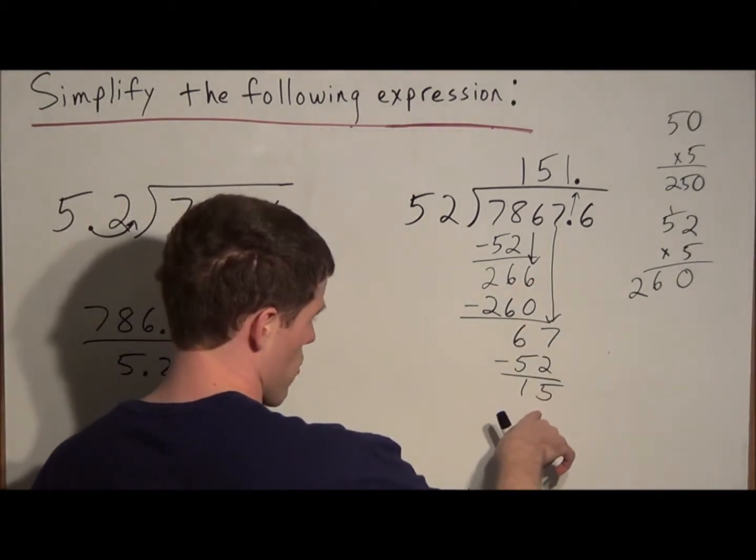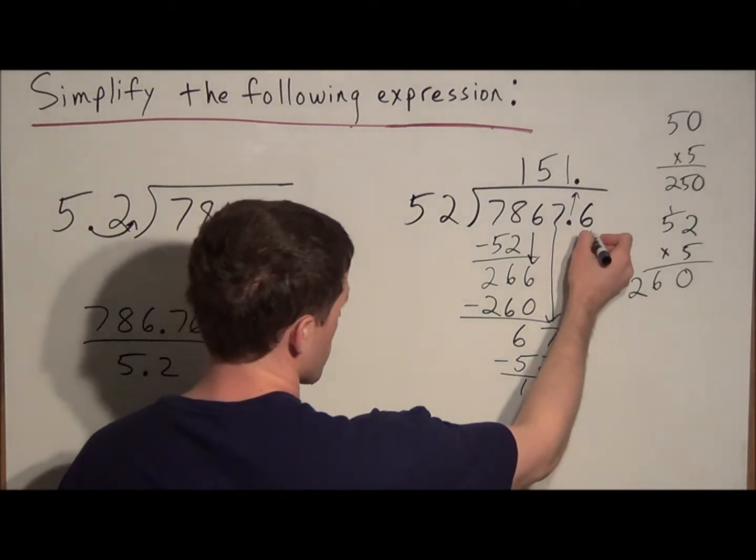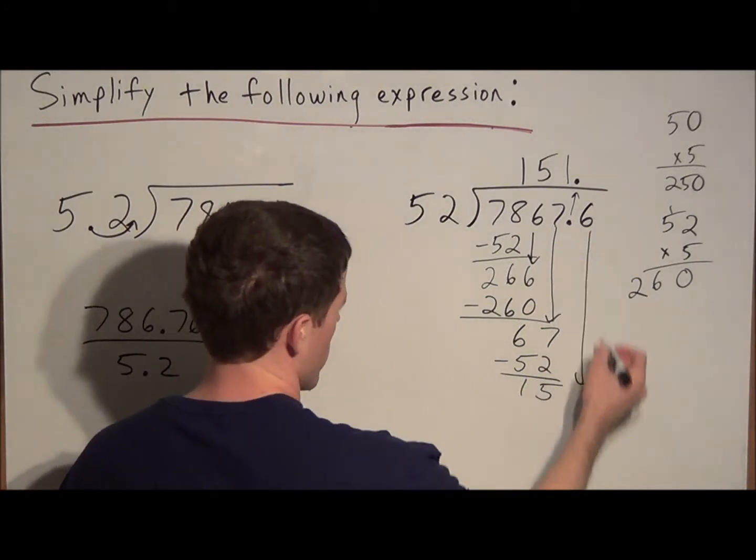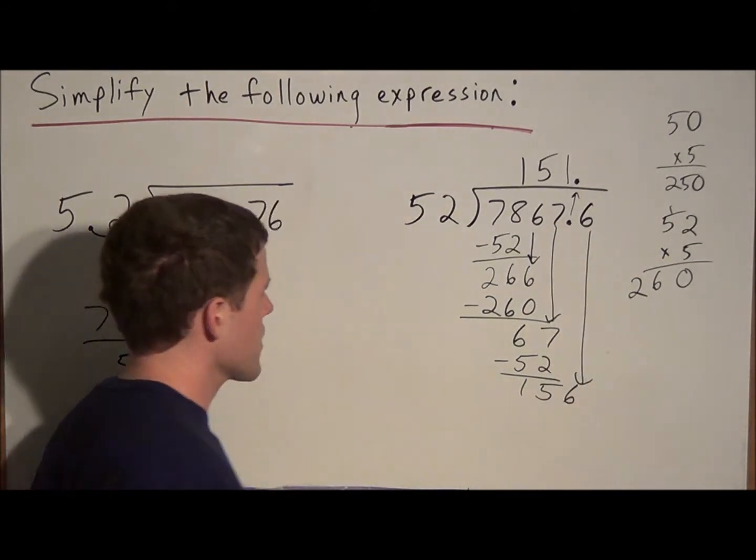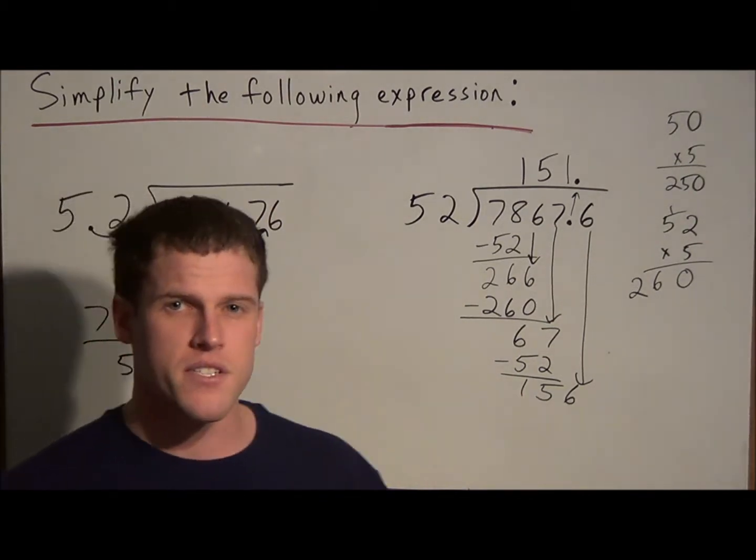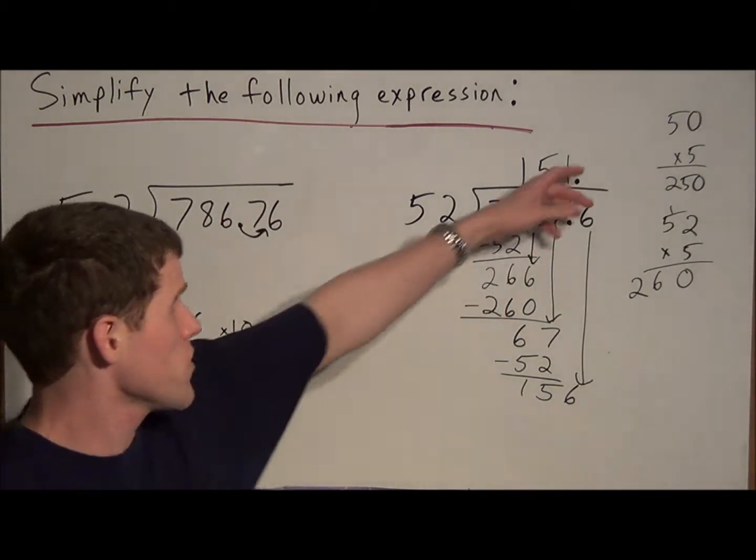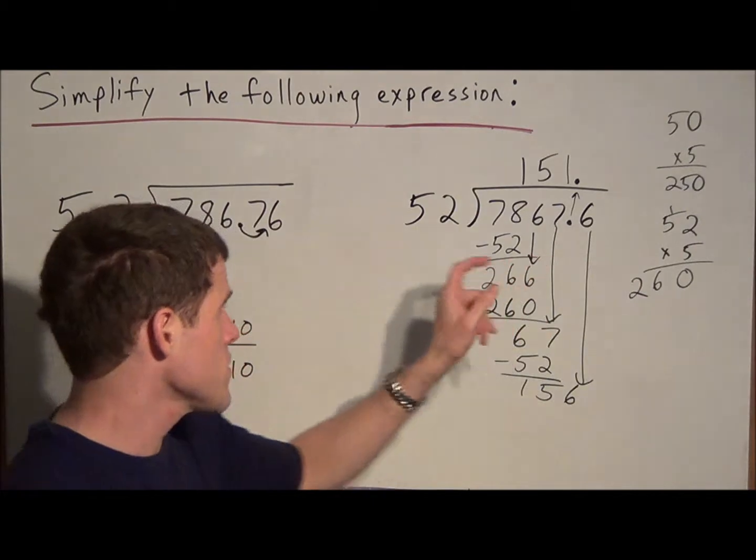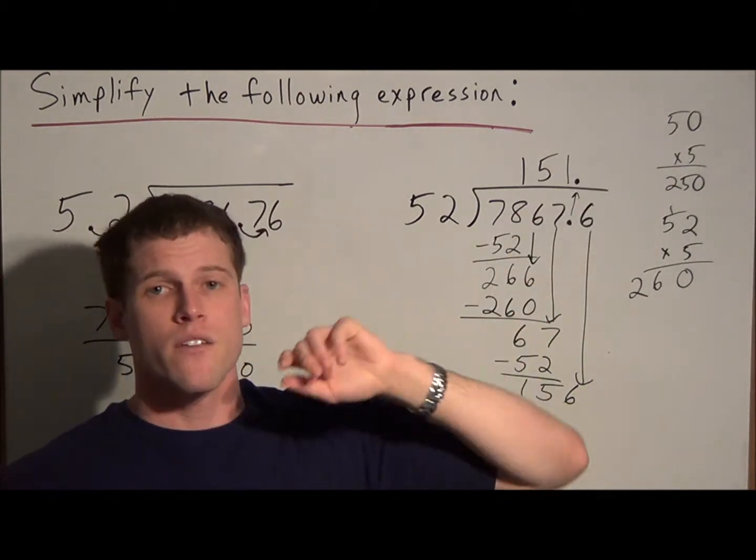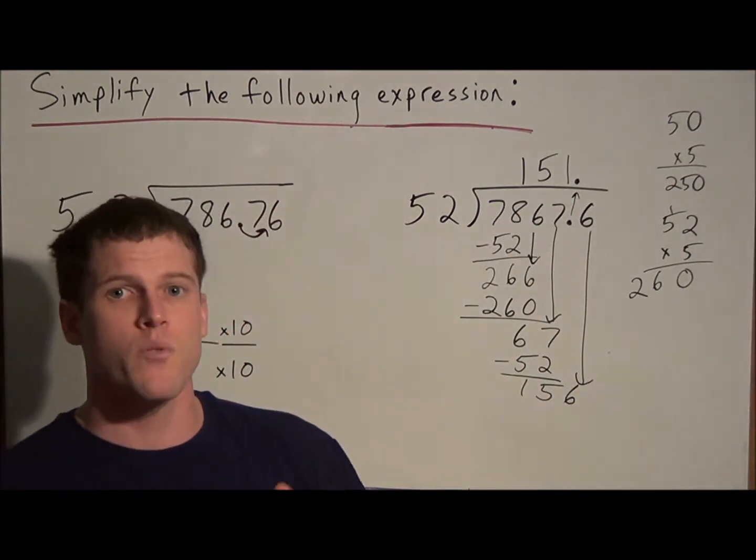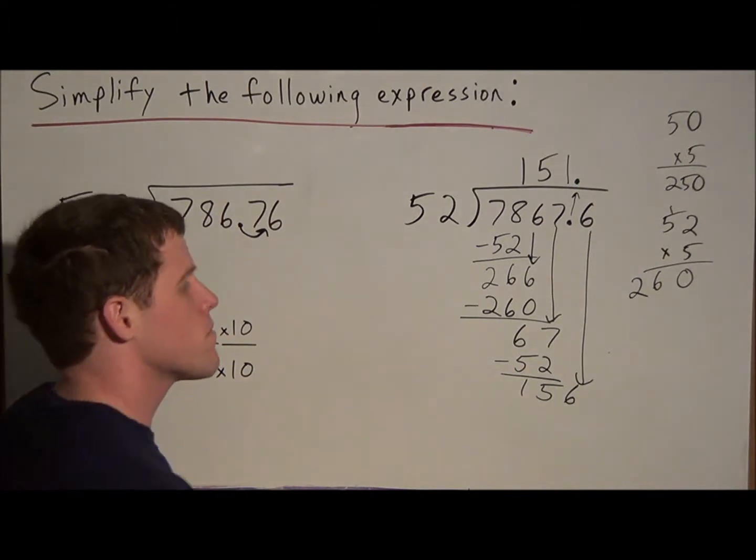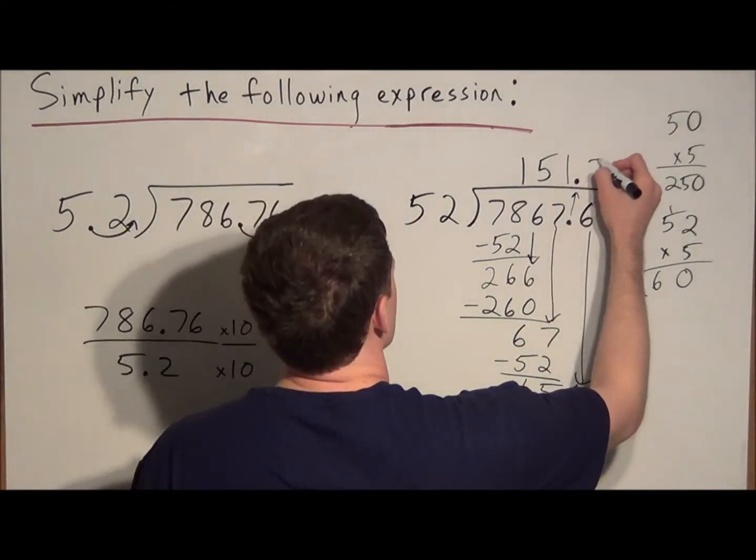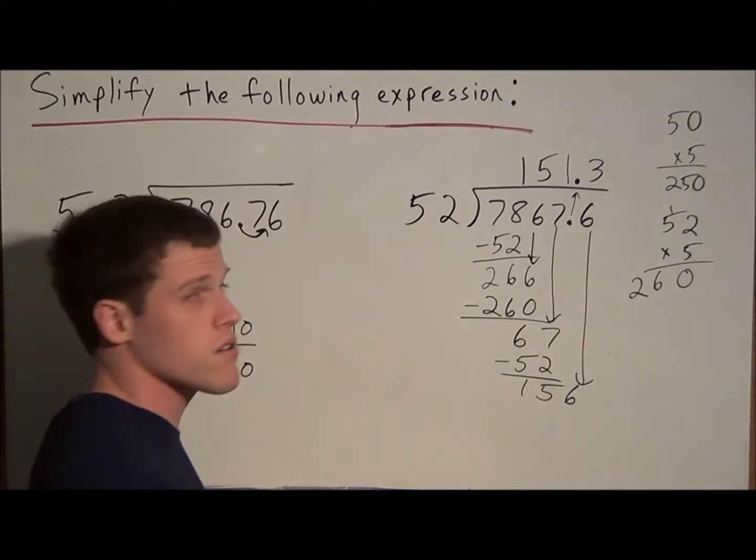But since we have our remainder, remember, every time you get your remainder, you carry down the next number. So we're carrying down the 6. And think about 52 goes into 156. Like I said, use your estimation strategy, 52 is close to 50. And if you did 50 times 3, that would be 150. So we could estimate and say that 3 is going to go here, and we'll see how close we could get.